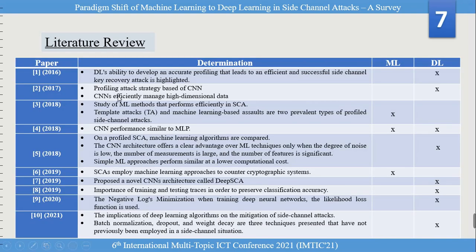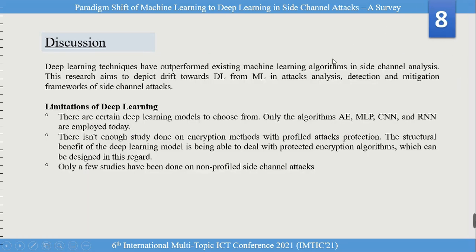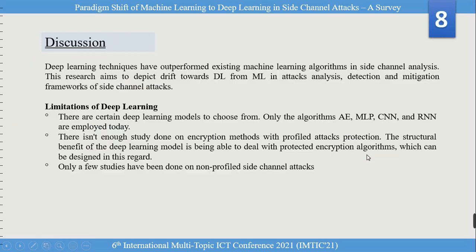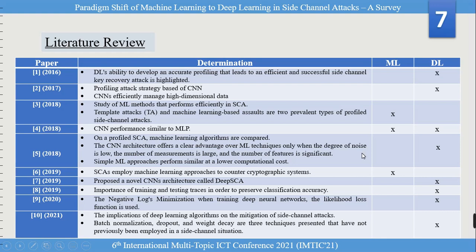This is a literature review based on machine learning and deep learning applied to side channel attacks. These are some papers that use machine learning or deep learning, mentioned in the literature table. In the discussion part, throughout the paper we discuss how deep learning models outperform existing machine learning models. However, this does not mean machine learning is completely replaceable — machine learning is also good to some extent. There are limitations of both machine learning and deep learning.